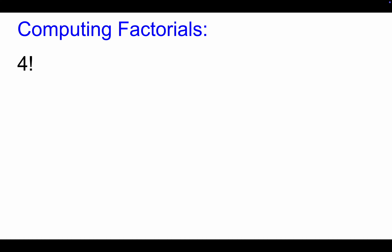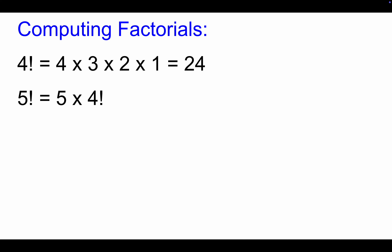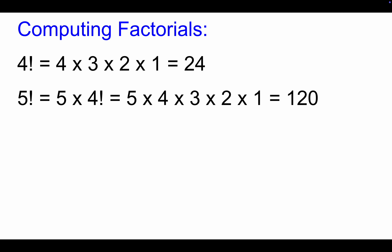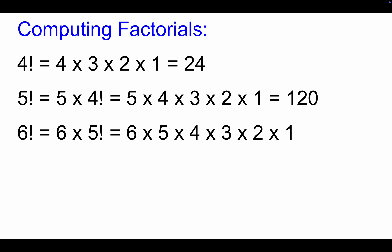Let's start computing factorials. 4 factorial means 4 times 3 times 2 times 1, which equals 24. 5 factorial is really just 5 times 4 factorial, or 5 times 4 times 3 times 2 times 1, which equals 120. Similarly, 6 factorial is 6 times 5 factorial, which equals 6 times 5 times 4 times 3 times 2 times 1.